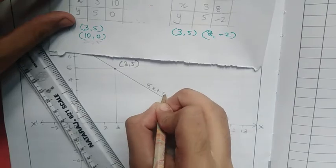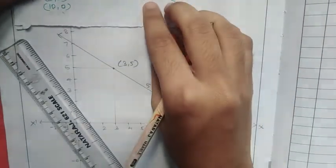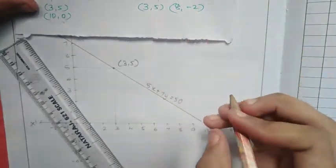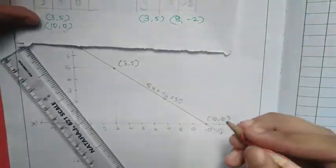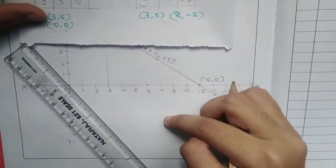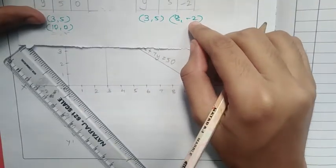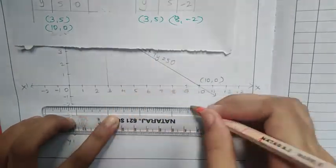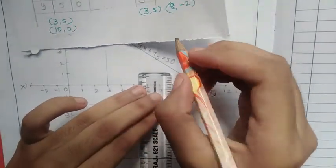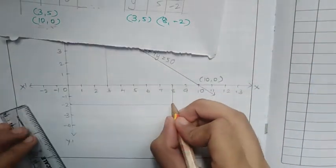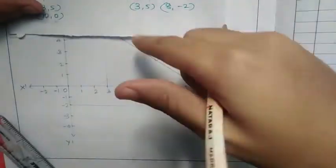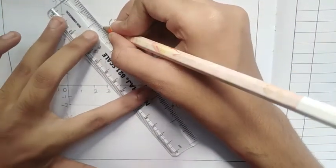For the equation 5x plus 7y equals 50, we write the points. The point (3, 5) is already located. Another point is (8, negative 2) where x equals 8 and y equals negative 2. We join the two points to draw the line.